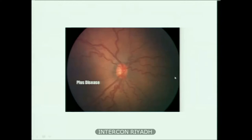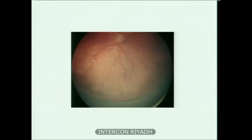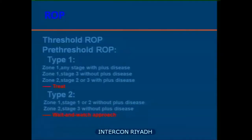Regarding when to screen: the first screening is usually from 4 to 7 postnatal weeks, or at 31 weeks post-conceptual age, with small variations depending on gestational age. Equipment needed includes a premature speculum, a rotator to rotate the eye since the patient is not cooperative, dilating drops, and the lens for the indirect ophthalmoscope. The examination is a little stressful, so we need to be quick and monitor the baby during the exam.